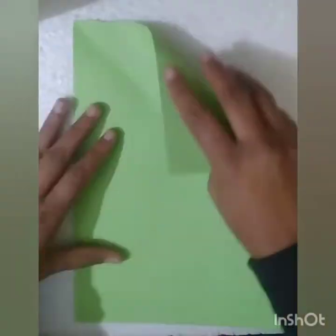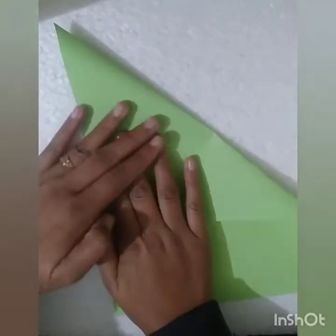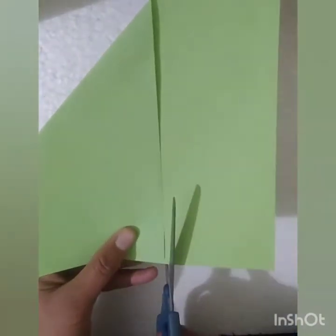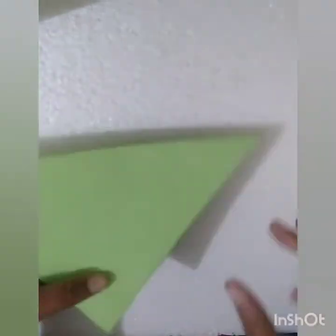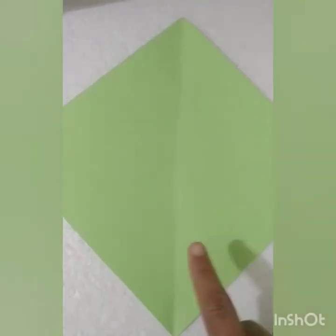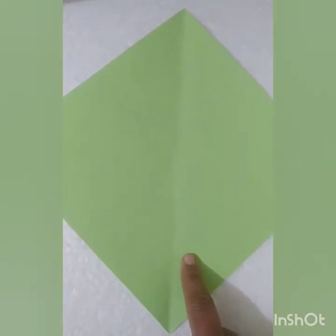So children, first of all take a colored sheet and cut it into a square shape like this. Children, this is a square shape. Now we will stick a triangle shape on this square shape.